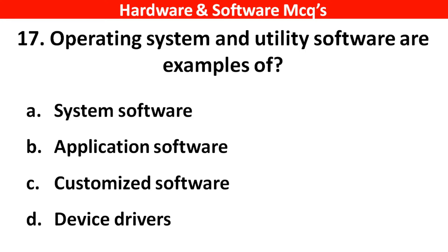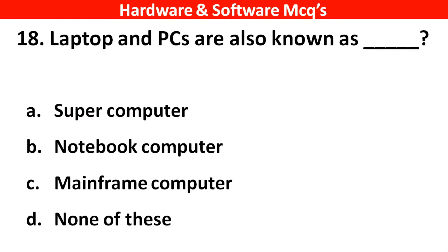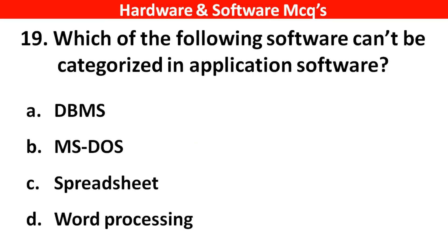Next question: Operating systems and utility softwares are examples of ___. The right answer is option A — system software. Next question: Laptops and PCs are also known as ___. The right answer is option B — notebook computer. Next question: Which of the following softwares cannot be categorized in application software? The right answer is option B — MS-DOS.